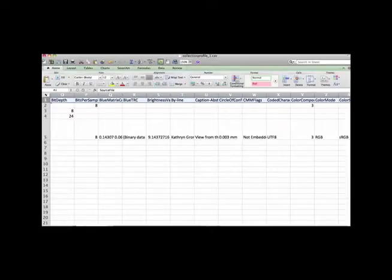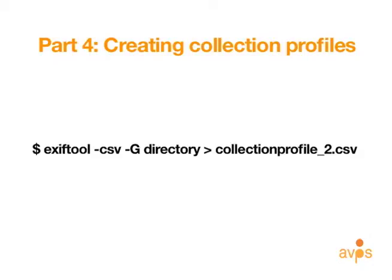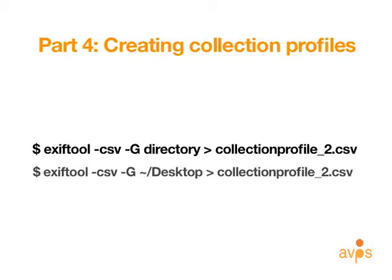Let's consider some customization options for collection profiles using EXIFTOOL's command line iteration. The first customization option we will look at is the inclusion of formatting options. The uppercase G option adds group names to the standard output. Because we don't want to overwrite our previous profile, let's add a 2 to the file name of the CSV created from this command. I want to continue scanning my working directory, but if you want to scan another directory, use this syntax. Where directory was written, type tilde backslash and the name of the directory. The sample here tells EXIFTOOL to scan the desktop for media files to read.